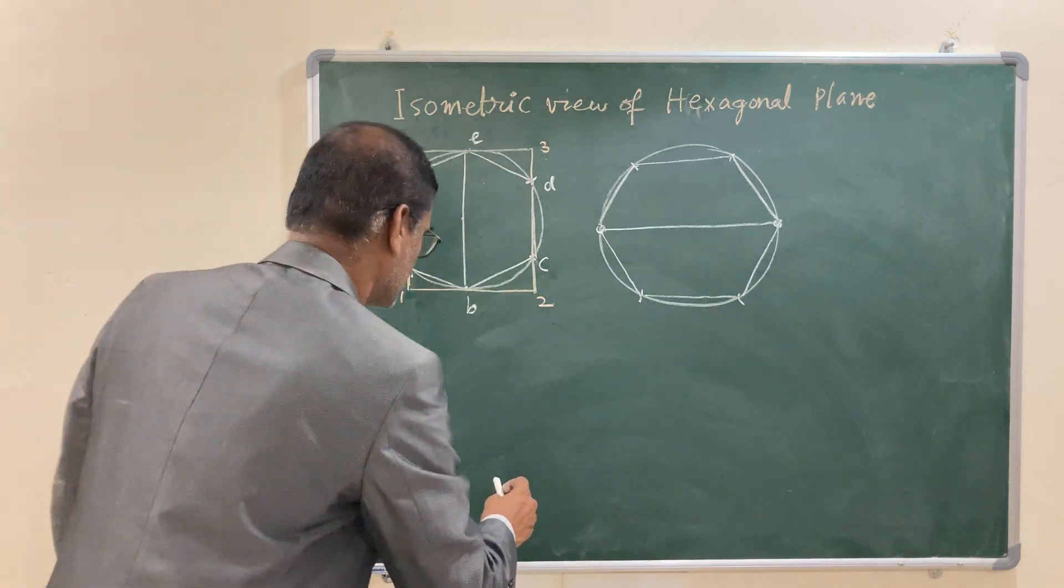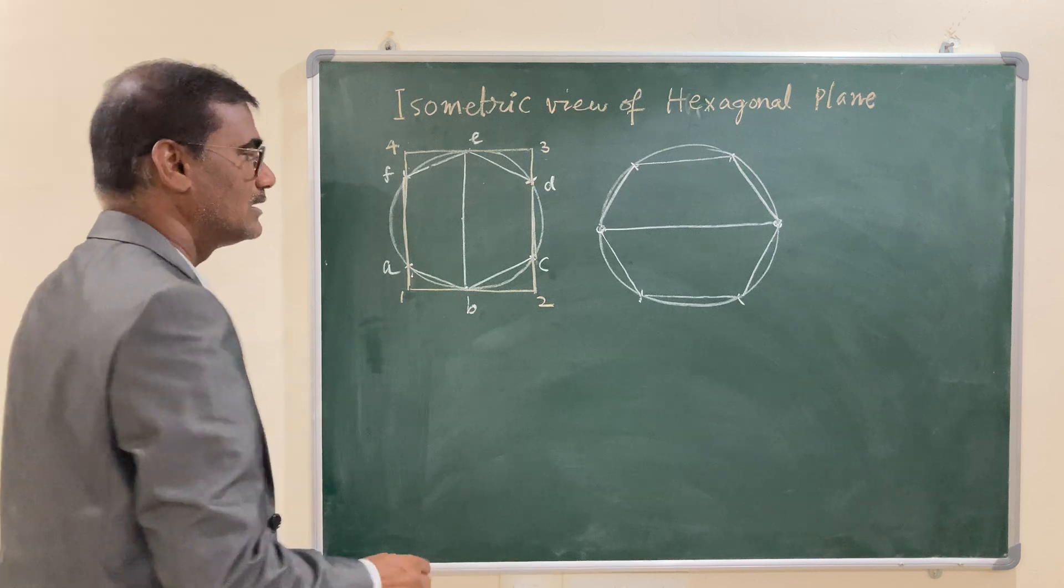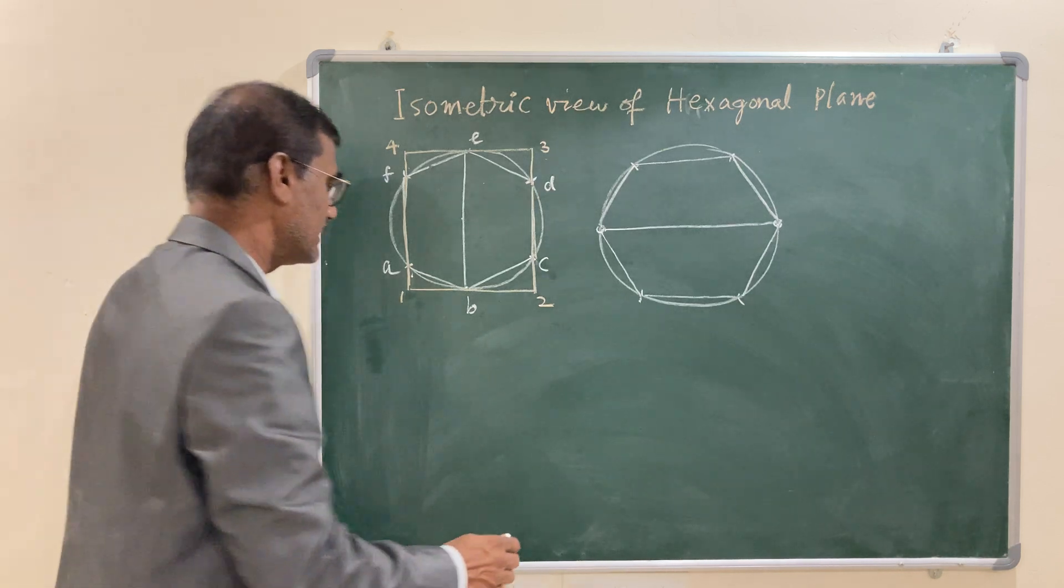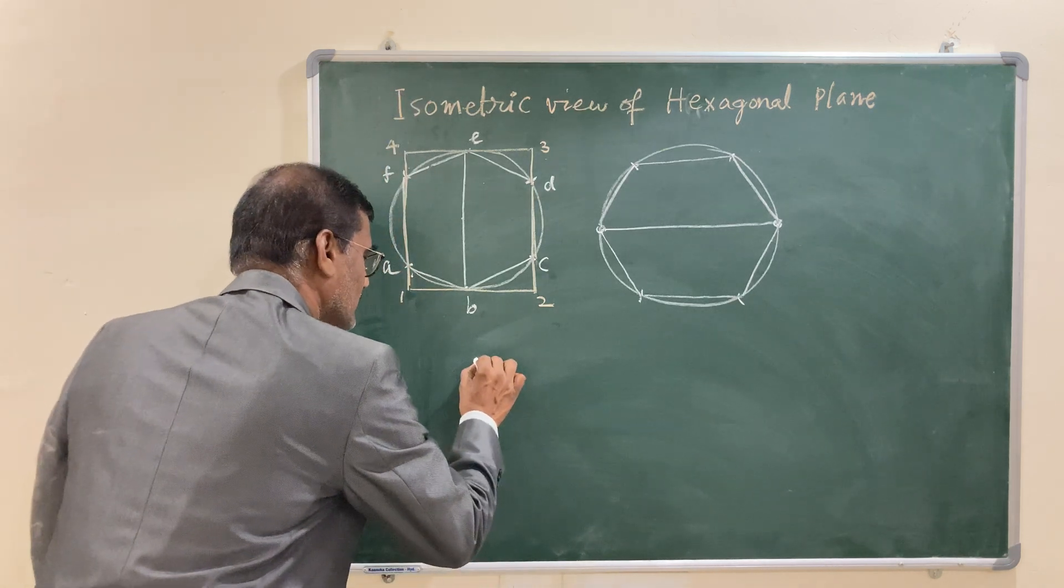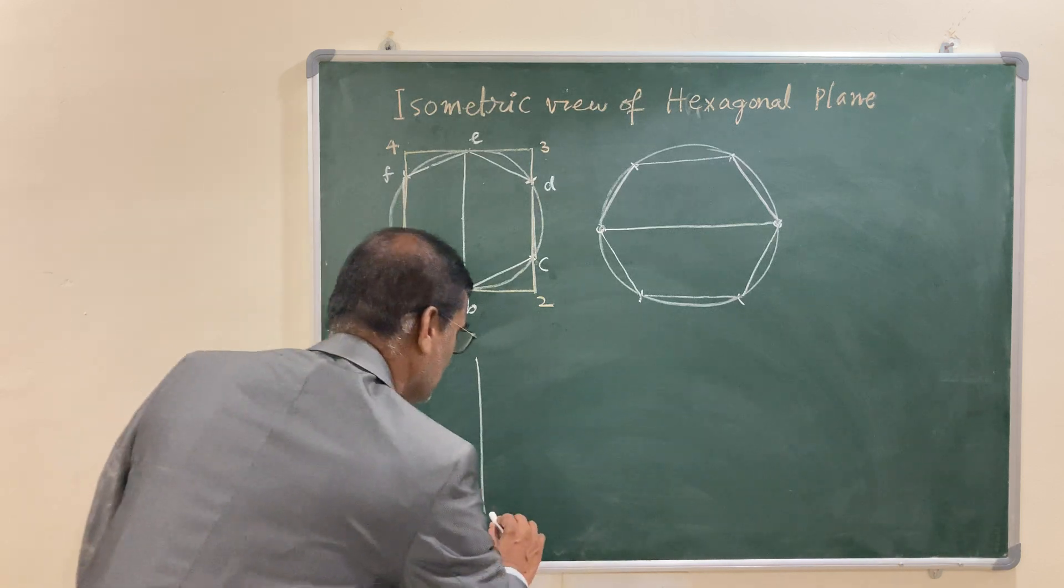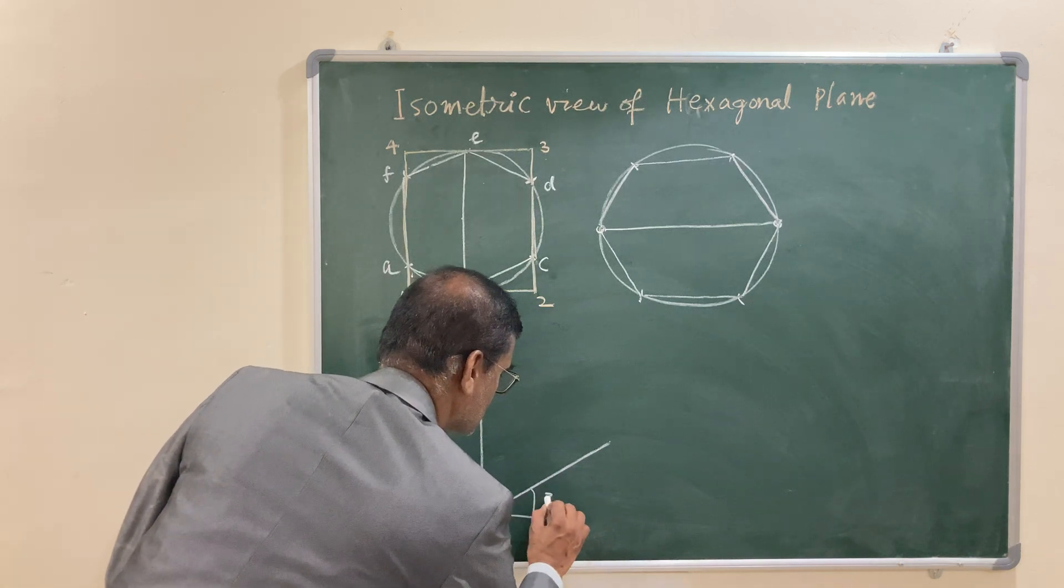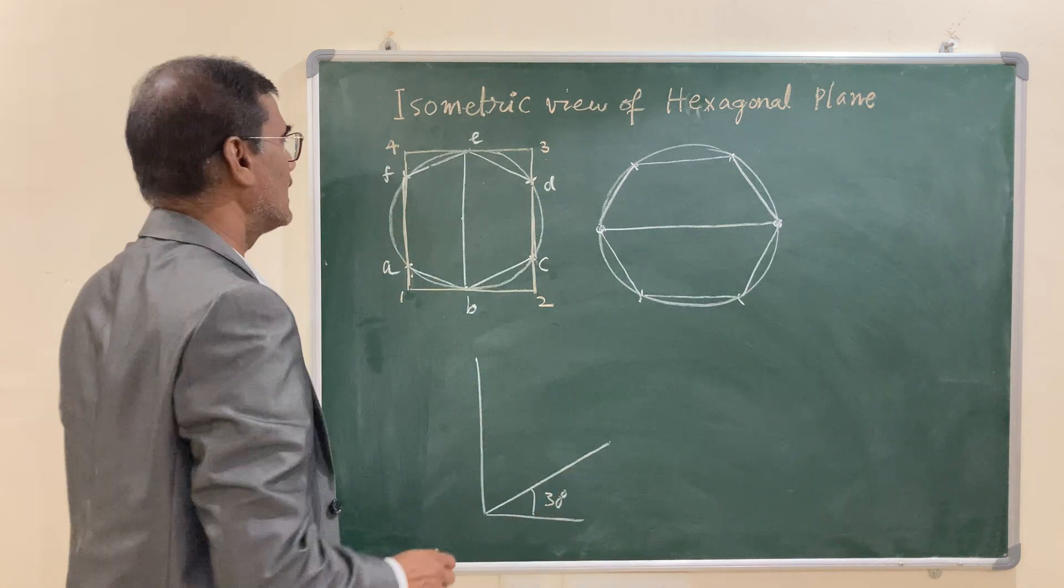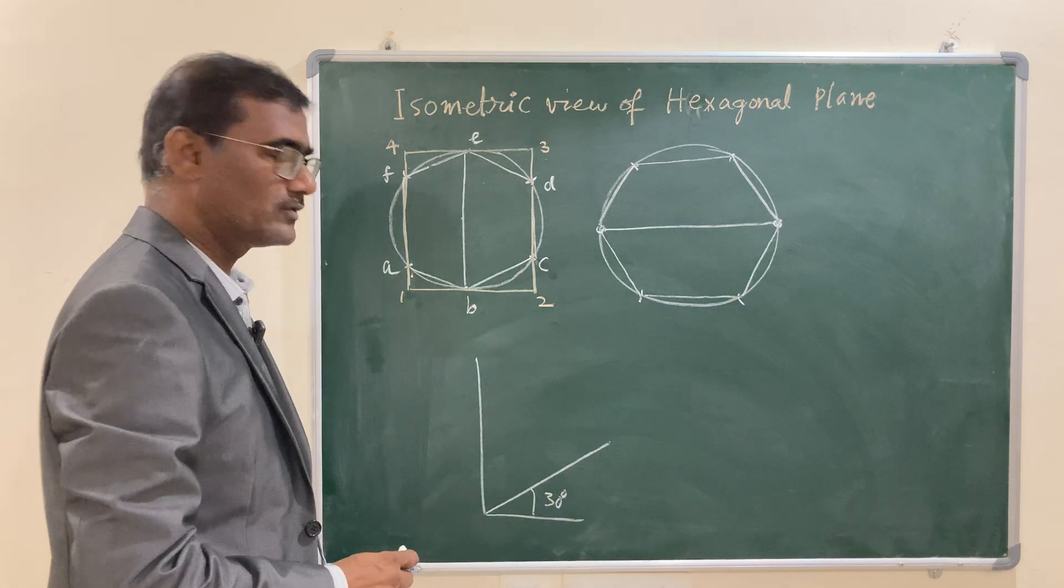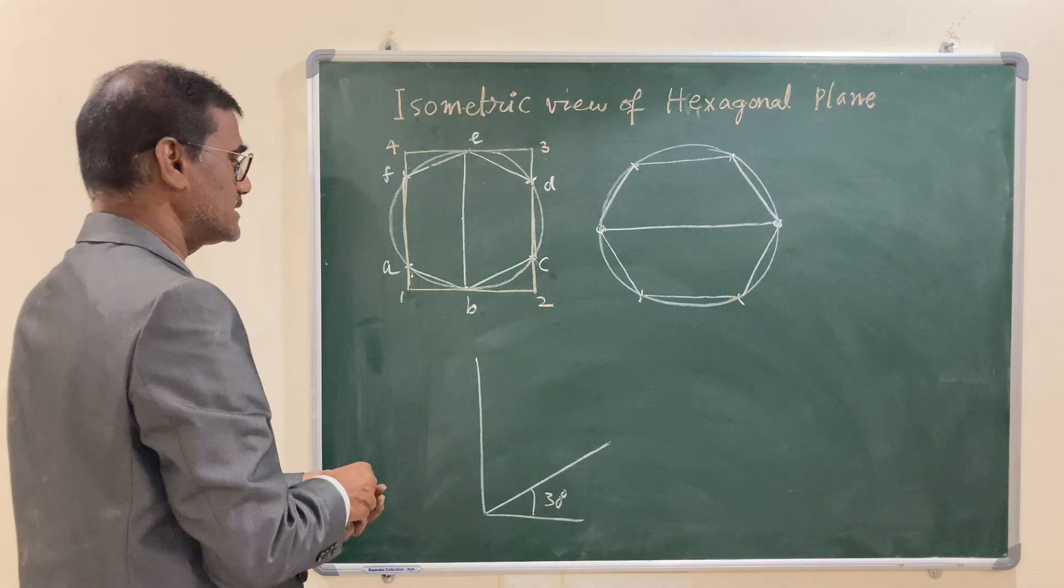Now, first of all, I want to draw this isometric view with a front view. And in front view, as you know, the vertical lines remains vertical and horizontal will be inclined at an angle 30 degrees with the horizontal. So, let us draw this and complete this 1, 2, 3, 4 rectangle in isometric view.